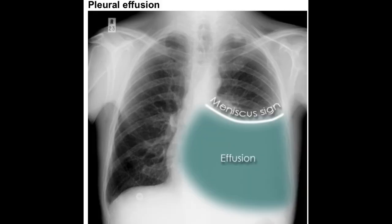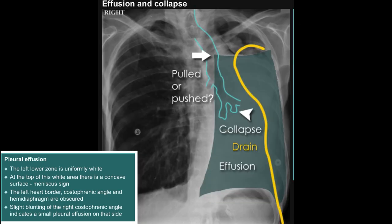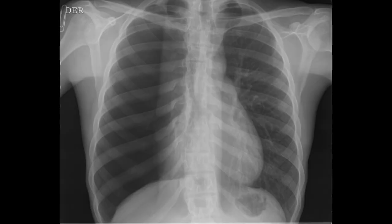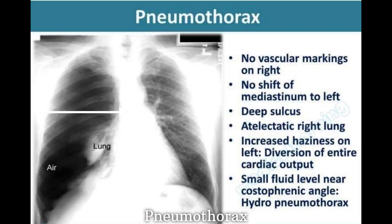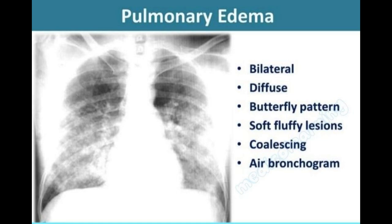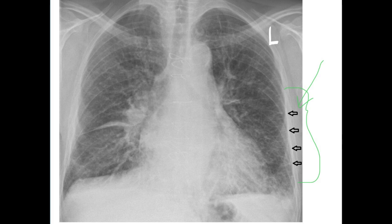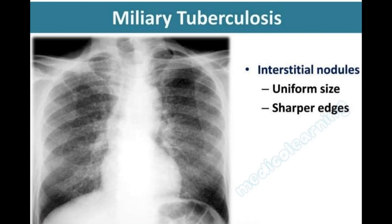For abnormal lungs and pleura: pleural effusion shows blunting of the costophrenic angle and a meniscus sign, with the trachea pushed away. In a collapsed lung, there are white opacities and volume loss, with the trachea pulled and crowding of the ribs. In pneumothorax, there is a hyperlucent area, absent vascular markings, and a visible pleural line. Consolidation shows homogeneous white opacities and air bronchograms. Pulmonary edema presents with a bat-wing appearance or Kerley B lines. Miliary tuberculosis shows diffuse nodules throughout the lung fields.